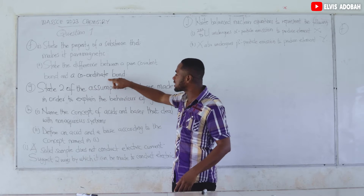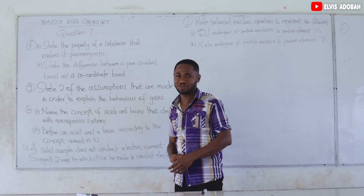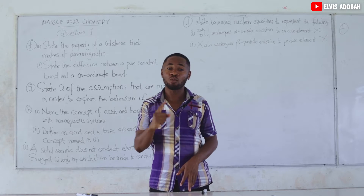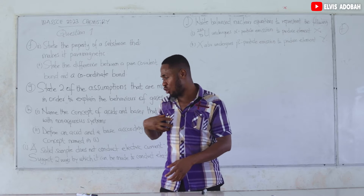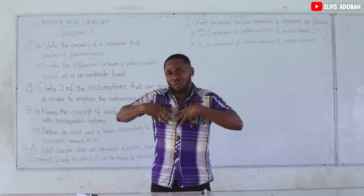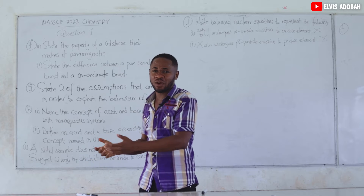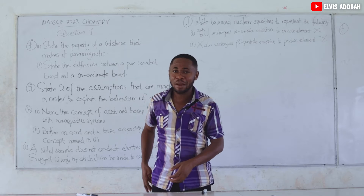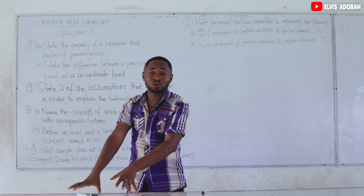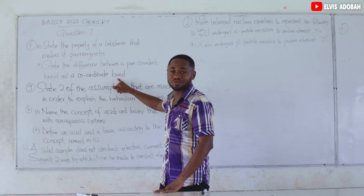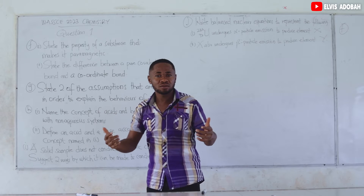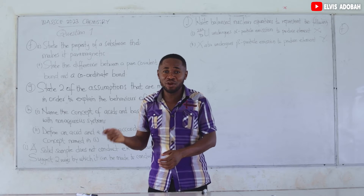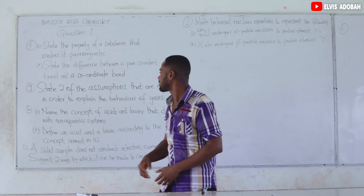In a coordinate bond, also called a dative covalent bond, the shared electrons do not come from both species — they come from only one species. It's just like having a rich friend: when you go out to eat, that person brings all the money and buys the food, but both of you enjoy it together. That is a coordinate bond. A pure covalent bond is like two friends of equal financial status — each brings equal contribution, they combine, buy, and both eat.